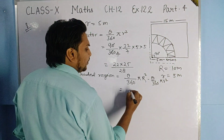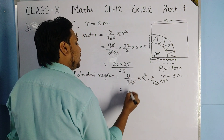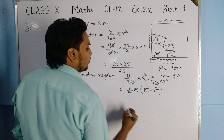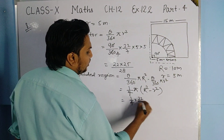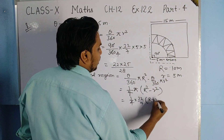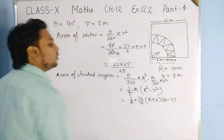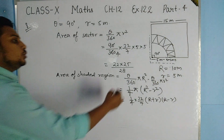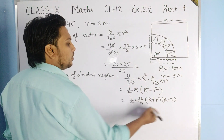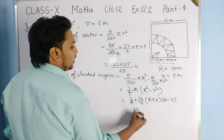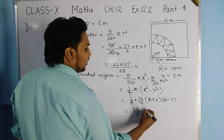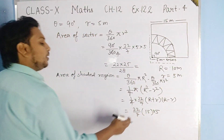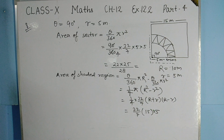Taking theta/360 = 1/4 as common: (1/4) × (22/7) × (R² − r²), which can be written as (1/4) × (22/7) × (R + r)(R − r). Substituting R = 10, r = 5: (R + r) = 15 and (R − r) = 5. Simplify to get your final answer.